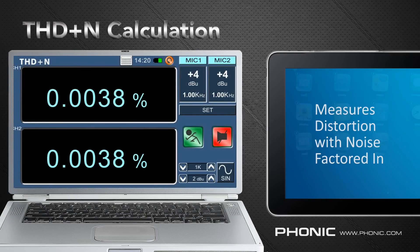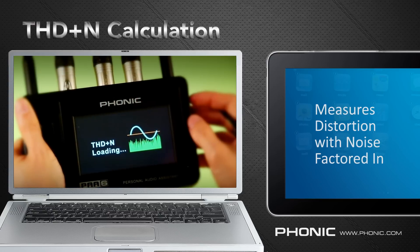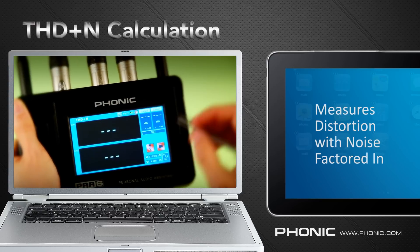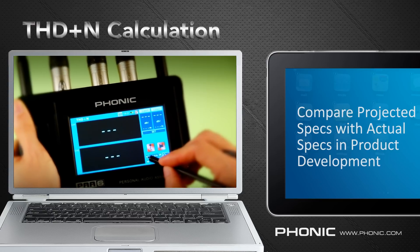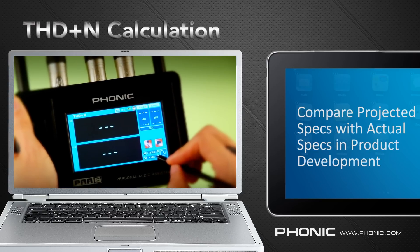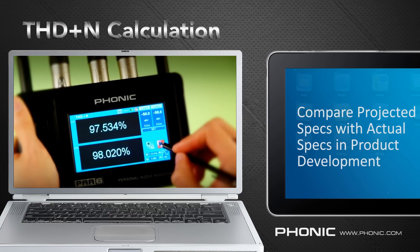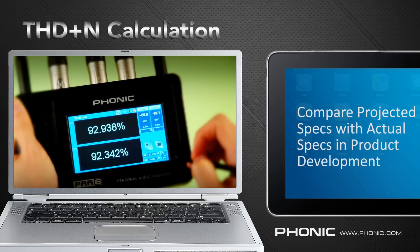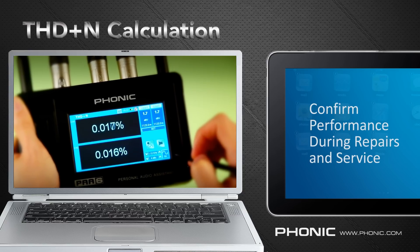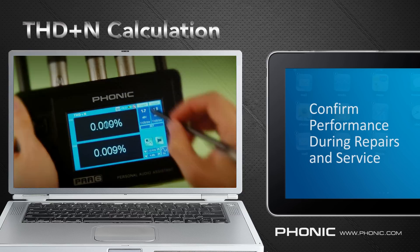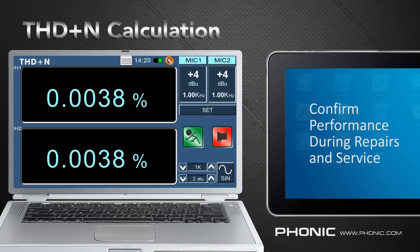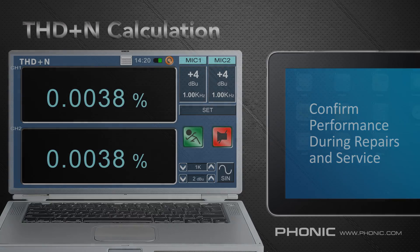The next function is THD plus N, or Total Harmonic Distortion plus Noise. A lot of measurement devices only measure the total harmonic distortion without factoring in the noise. The PAA6 also includes the noise in the results, as discounting it will only give you an idea of the distortion alone and will completely discount any noise that is added to the signal by the device.